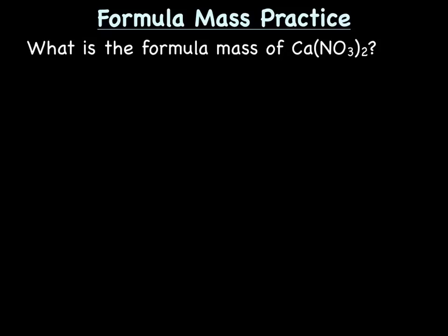Okay, let's try to calculate a formula mass. So let's start with the problem: what is the formula mass of Ca(NO3)2 or calcium nitrate? The first thing we want to do is figure out what kind of atoms calcium nitrate is made up of. Well, it's made up of calcium and two nitrates.